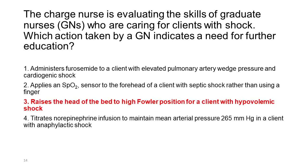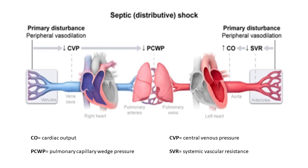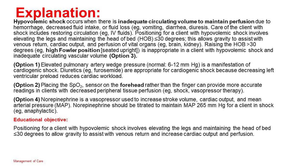Correct answer: 3. Hypovolemic shock occurs when there is inadequate circulating volume to maintain perfusion due to hemorrhage, decreased fluid intake, or fluid loss, e.g., vomiting, diarrhea, diuresis. Positioning for a client with hypovolemic shock involves elevating the legs and maintaining the head of bed (HOB) at ≤30 degrees. This allows gravity to assist with venous return, cardiac output, and perfusion of vital organs, e.g., brain and kidney. Raising the HOB greater than 30 degrees, e.g., high Fowler position, is inappropriate in a client with hypovolemic shock — option 3.